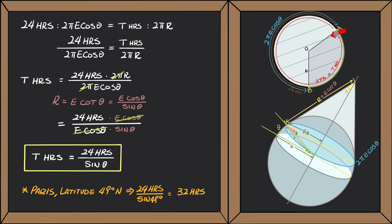We can see from this equation that as the latitude gets closer to 90 degrees, the value of sine theta gets closer to 1, and thus t gets closer to 24 hours.